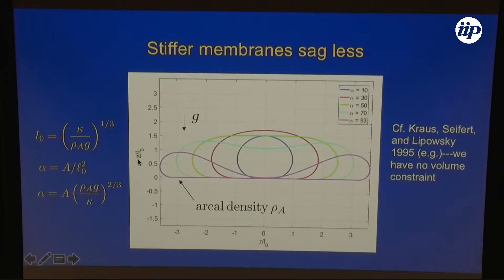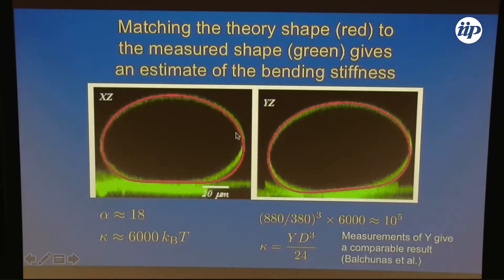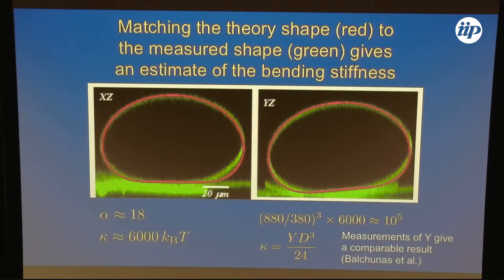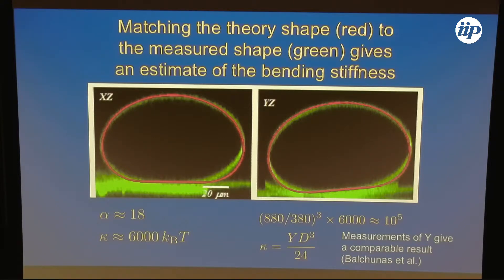Leroy Gia, my student, has scaled the dimensions by a characteristic length L₀, so these all have the same area. We can compare the shape with what the experimentalists measure, and we come up with a bending stiffness for these short rods of about 6,000 k_B T. If we want to estimate for the longer rods, which are three times longer, we take the ratio of the thicknesses, so it's going to be much bigger — and indeed there are recent measurements of the compression modulus of the membrane using which we get a similar prediction of about 100,000 k_B T for the stiffness.